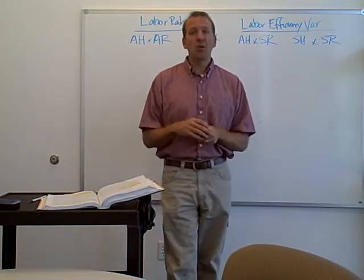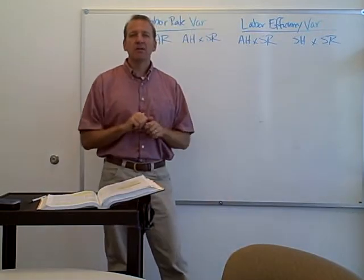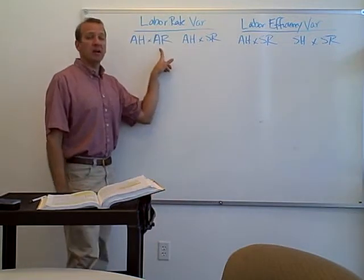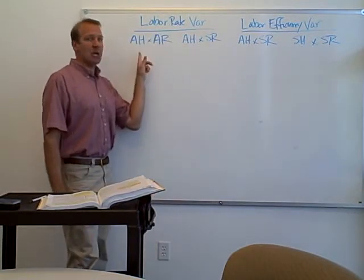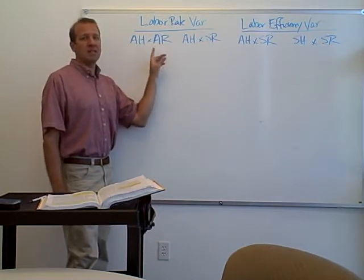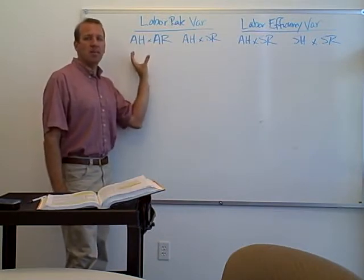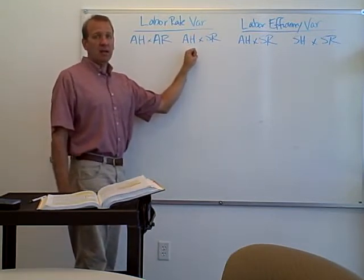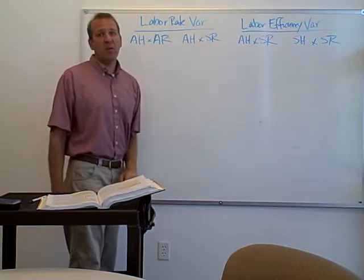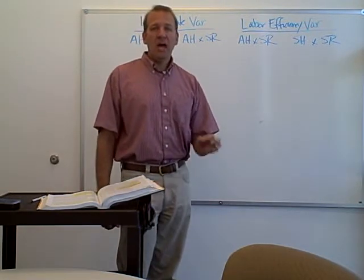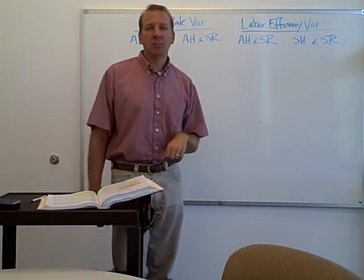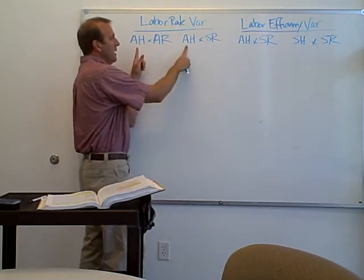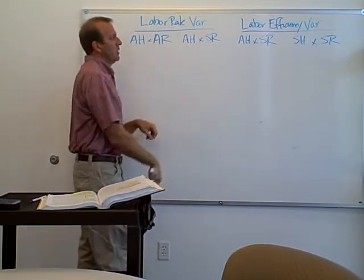So who do we want? We've got to look at the variances and see how employees are doing. To calculate the labor rate variance, we take the actual hours times the actual rate, then compare it to the actual hours times the standard rate — what the rate should have been. Since it's a rate variance, what changes is the rate, and we keep the hours the same.